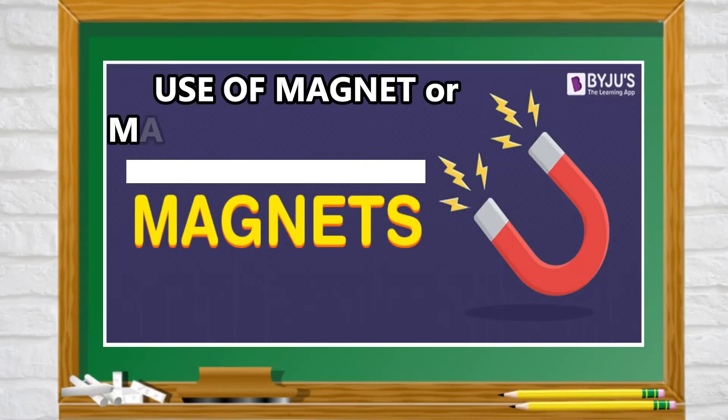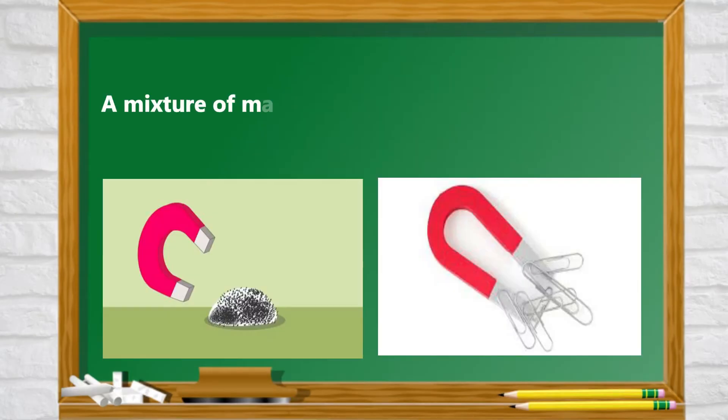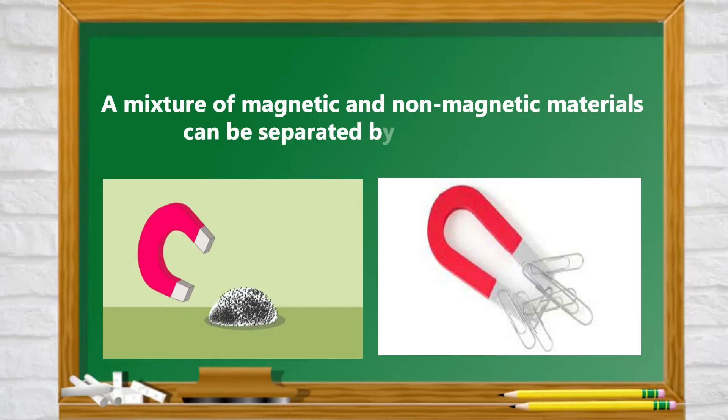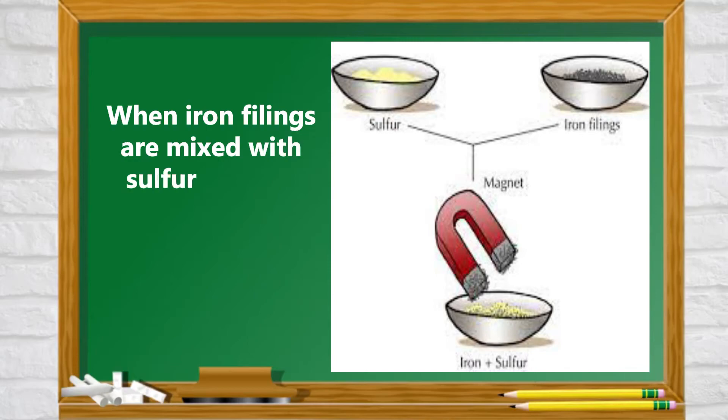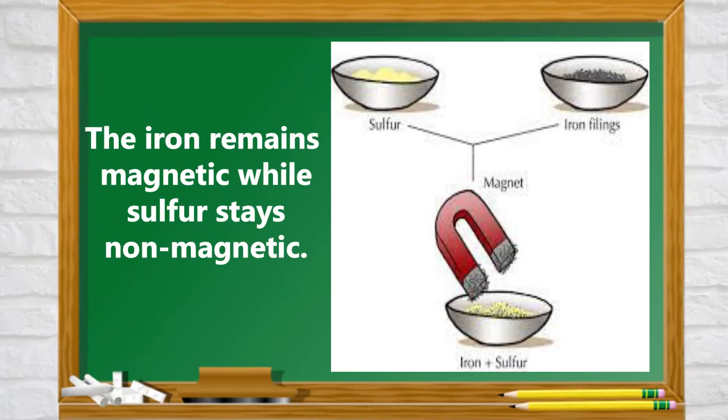Use of Magnet or Magnetic Separation. A mixture of magnetic and non-magnetic materials can be separated by using magnets. When iron filings are mixed with sulfur powder in a dish, they form a mixture but they keep their original properties. The iron remains magnetic while sulfur stays non-magnetic.